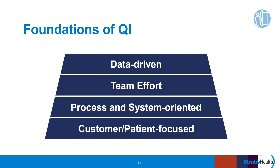If processes aren't working well, always pay attention to how the system is impacting performance — for example, culture, resources, equipment, and staffing. Lastly, quality improvement is based on reliable and accurate data, which is essential for decision making. We need an accurate, data-driven picture of how things are working in your organization.